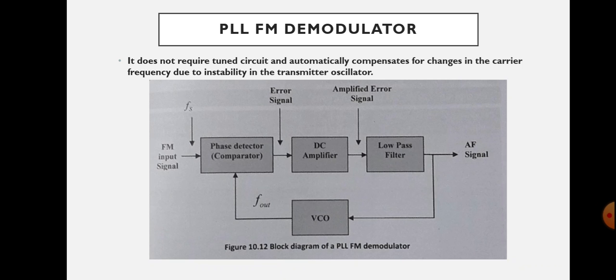PLL means phase locked loop. In the previous method, that is in the case of the direct method of FM demodulation, we are using a tank circuit in order to get the AM signal from the FM signal, and then it is envelope detected to get the original information signal. But in the case of PLL FM demodulation, it does not require a tuned circuit and it automatically compensates for changes in the carrier frequency due to instability in the transmitter oscillator.